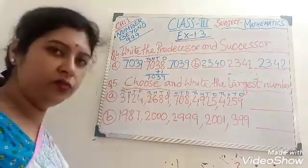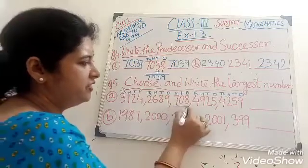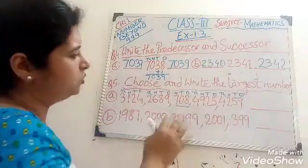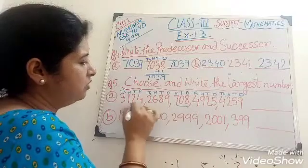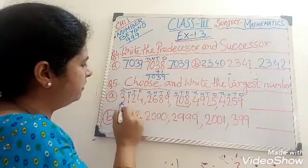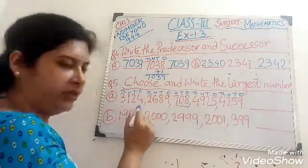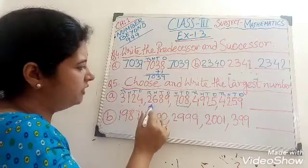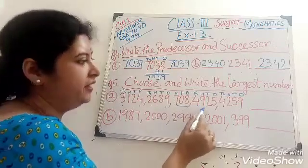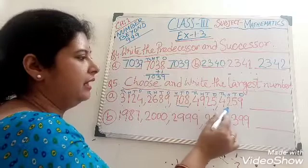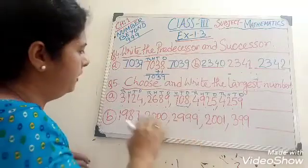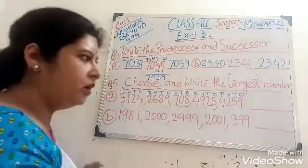Now check the thousand place first. Because this is a 3-digit number and our question is to pick up the largest number — all others are 4-digit numbers. So our numbers are: 3,124; 2,689; 4,925; and 4,259. So 4,000 is the larger category.